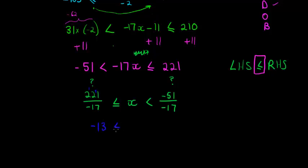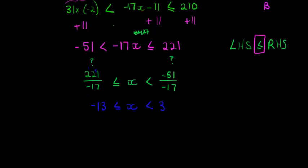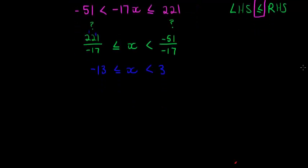Is smaller than or equal to x, which is smaller than, and here we said 51 and 17 goes three times, so this is a 3 and it's positive because the negatives change the sign. Great stuff. So this is our solution. We are working with x to be any number including negative 13 but not including 3, but all the numbers in between that can be a value for x.